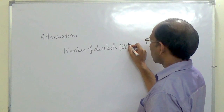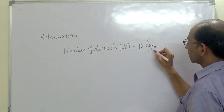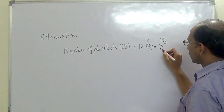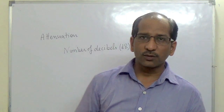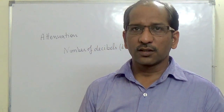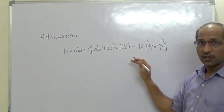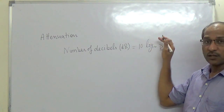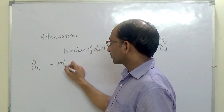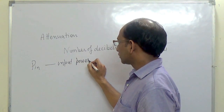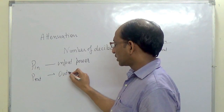The attenuation is denoted in dB and is equal to 10 log at base 10 of P_input upon P_output. So if one has to calculate the attenuation, we use this formula: number of decibels is equal to 10 log of P_input upon P_output, where P_input is the input power and P_output is the power of the signal at the emerging end.